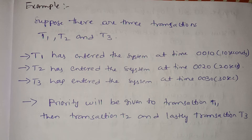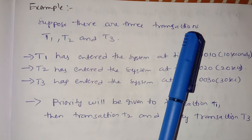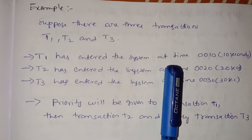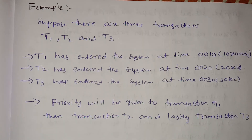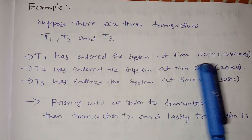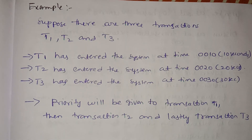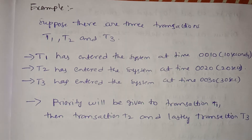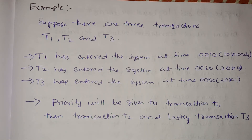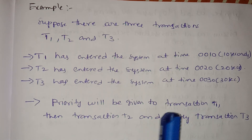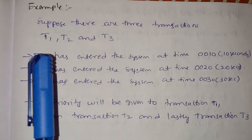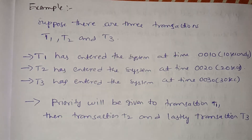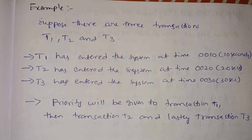For example, suppose there are 3 transactions T1, T2, T3. T1 entered the system at time 10 seconds, T2 entered at 20 seconds, and T3 entered the system at 30 seconds. Priority is given to T1 first, then T2, then T3 — so the serial order is T1, T2, T3.